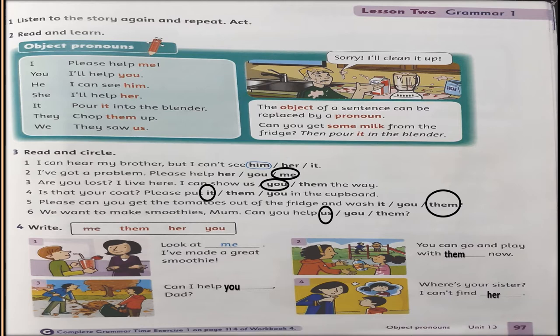Now let us do the exercises on page 97. Exercise 3 — read and circle: 'I've got a problem, please help me.' 'Are you lost? I can show you the way.' 'Is that your coat? Please put it in the cupboard.' 'Can you get the tomatoes out of the fridge and wash them? We want to make smoothies.' 'Mom, can you help us?' Exercise 4 — put these pronouns in the sentences: 'Look at me, I've made a great smoothie.' 'You can go and play with them now.' 'Can I help you, Dad?' 'Where is your sister? I can't find her.'